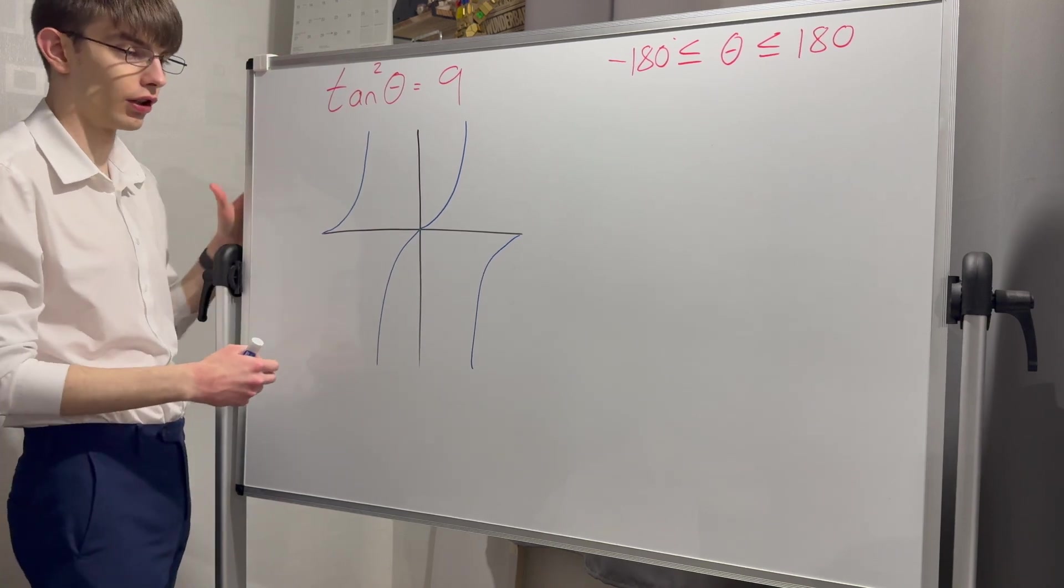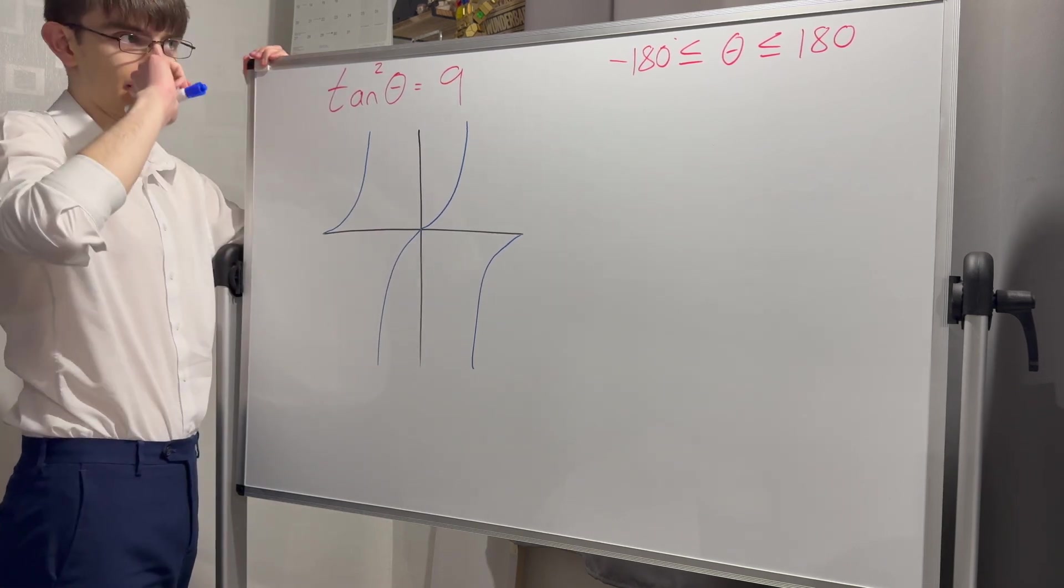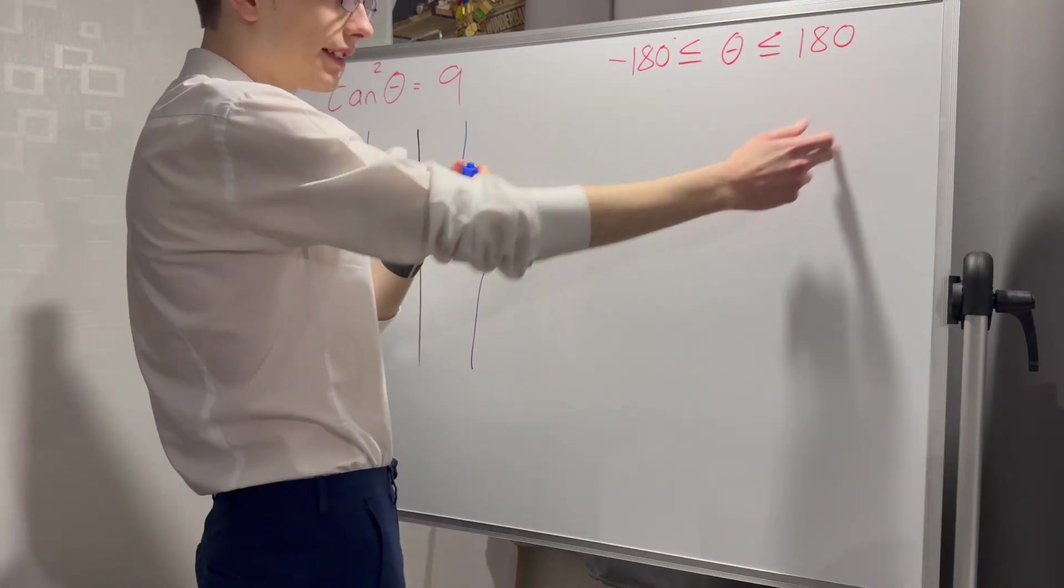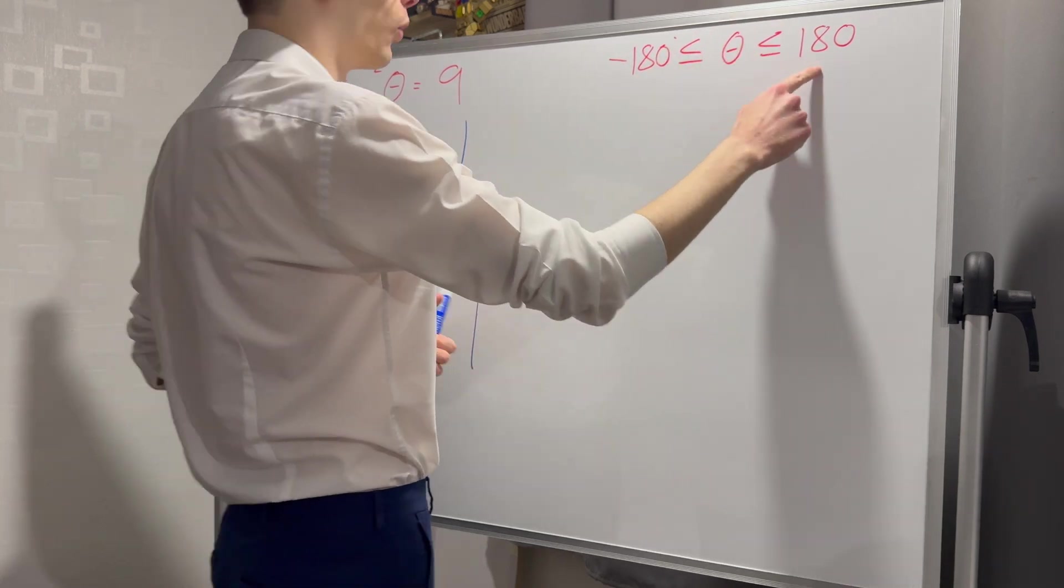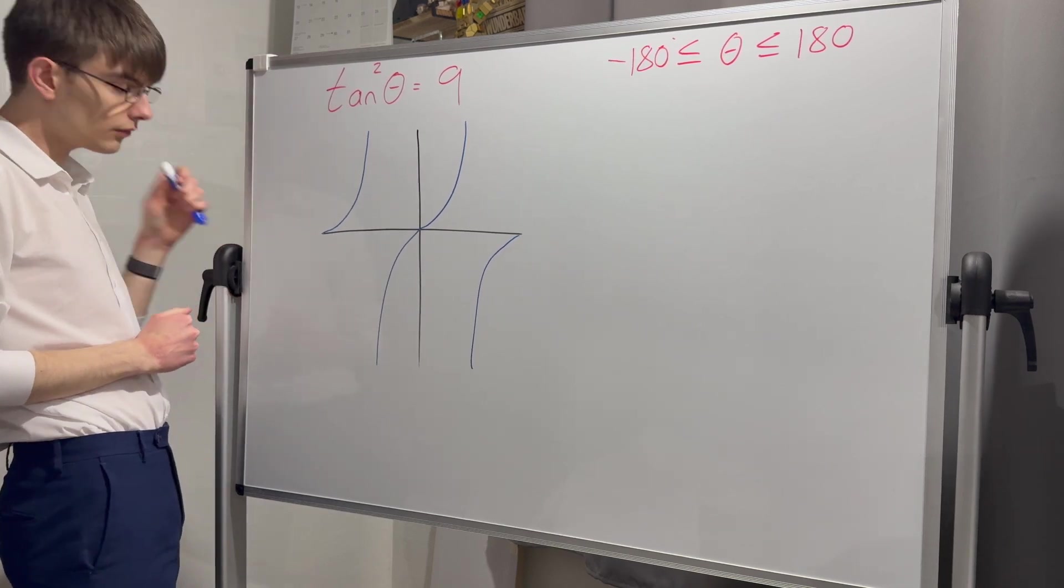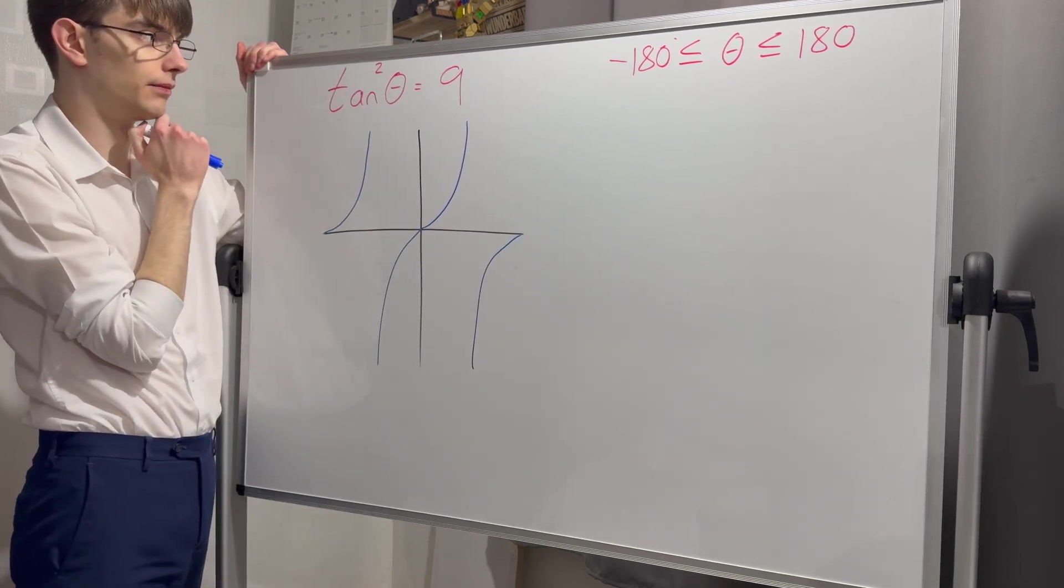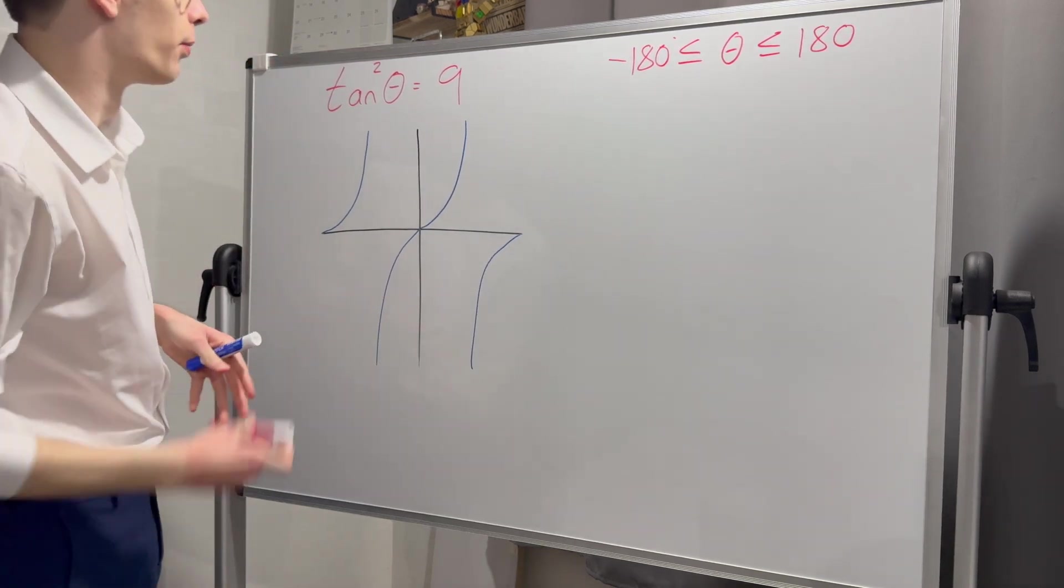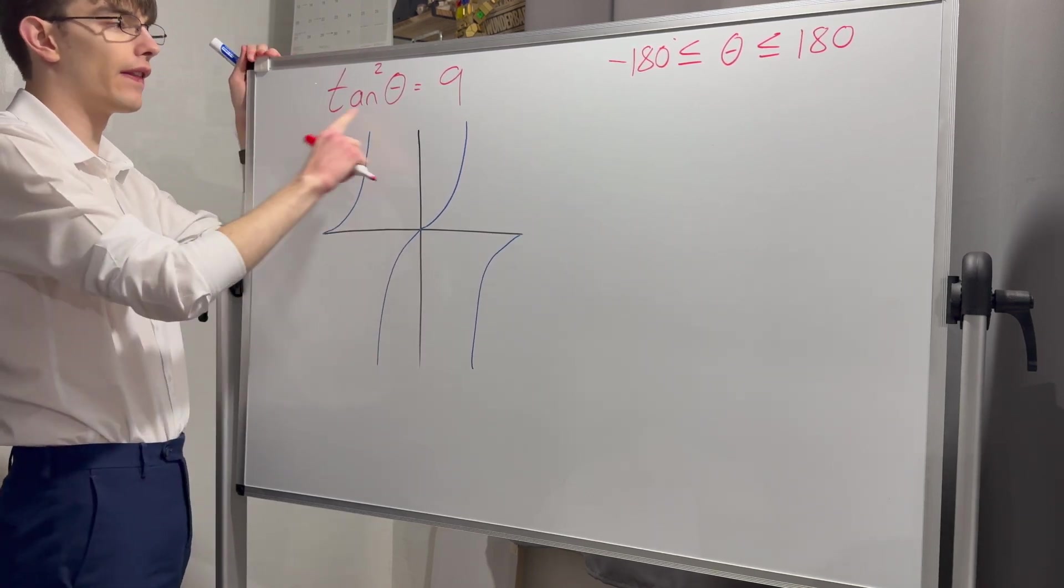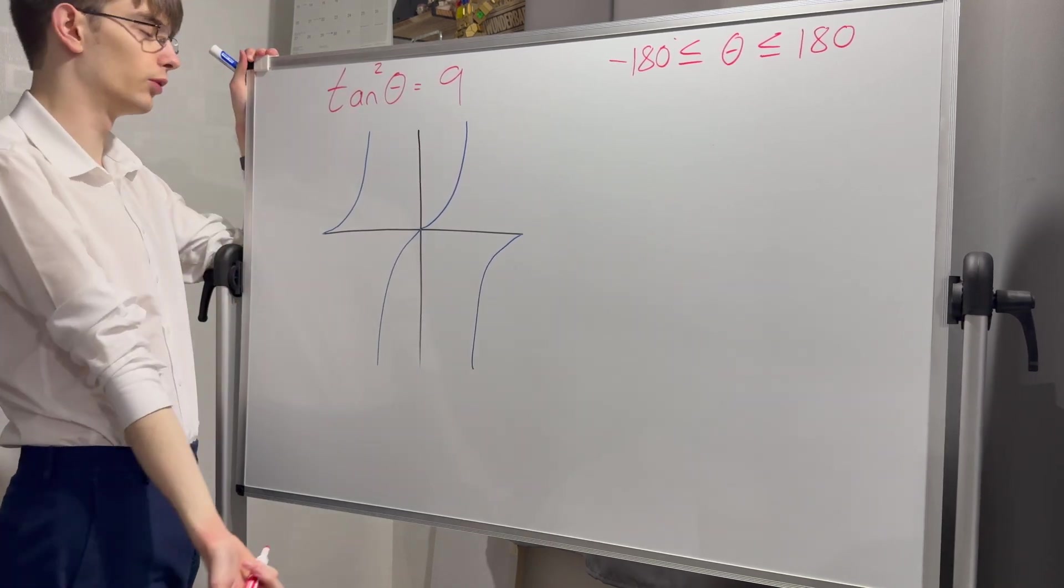For this example, I've got a tan graph here, slightly trickier in two ways. First, my range has now changed. I'm no longer looking for zero to 360, I'm looking for minus 180 to 180. I've also got tan squared of theta equals nine, not just tan theta equals something. I put this in to show when sometimes we have to solve twice.